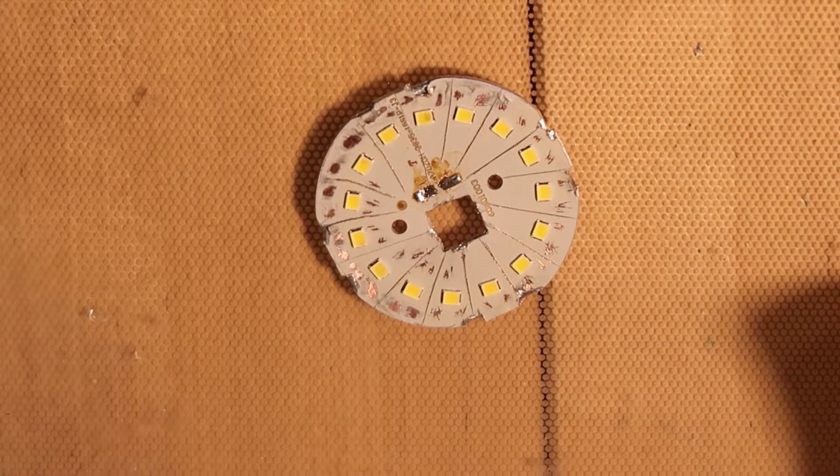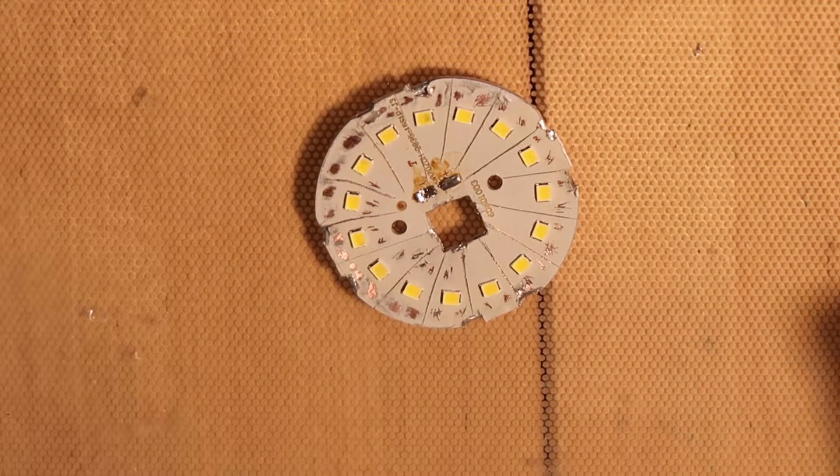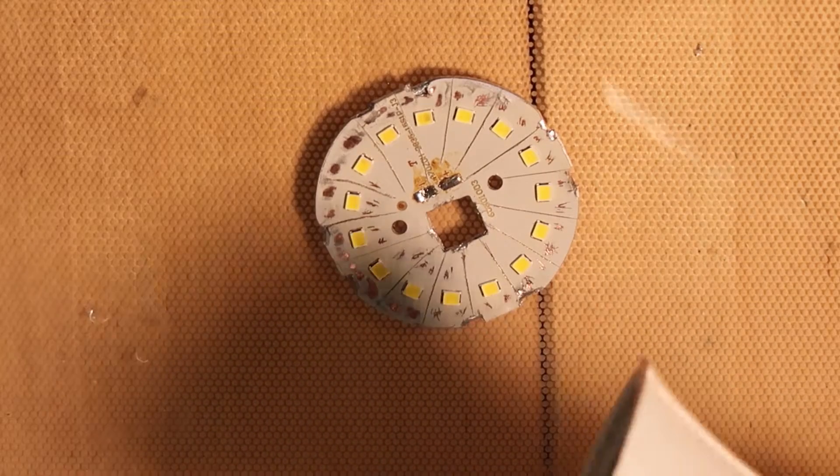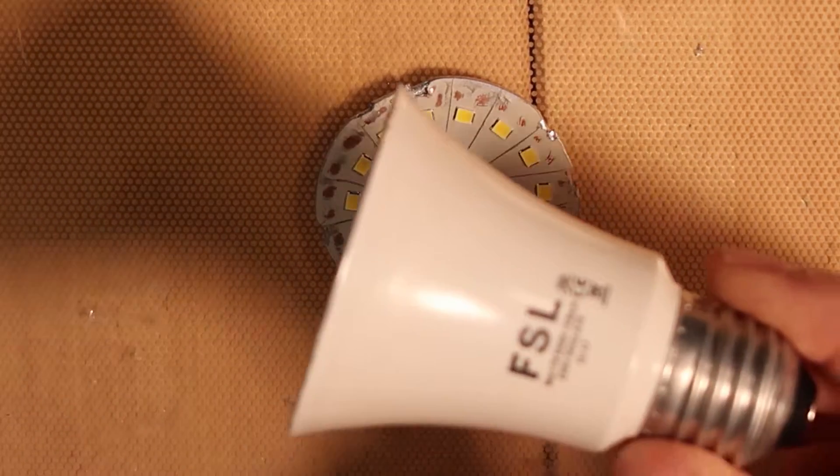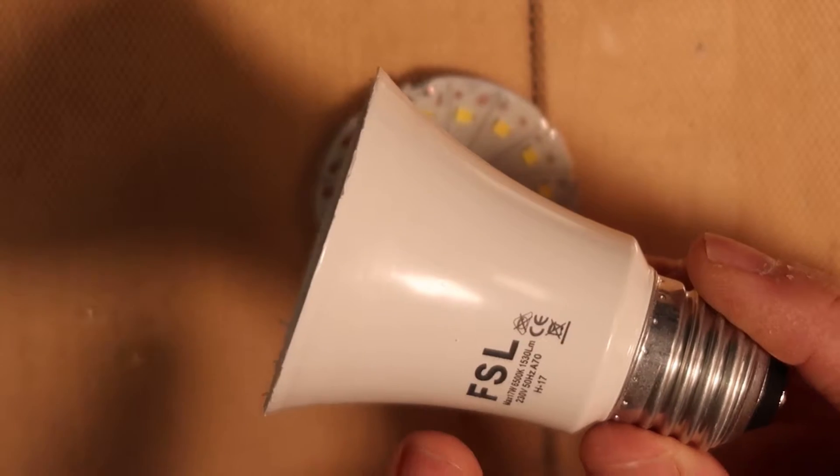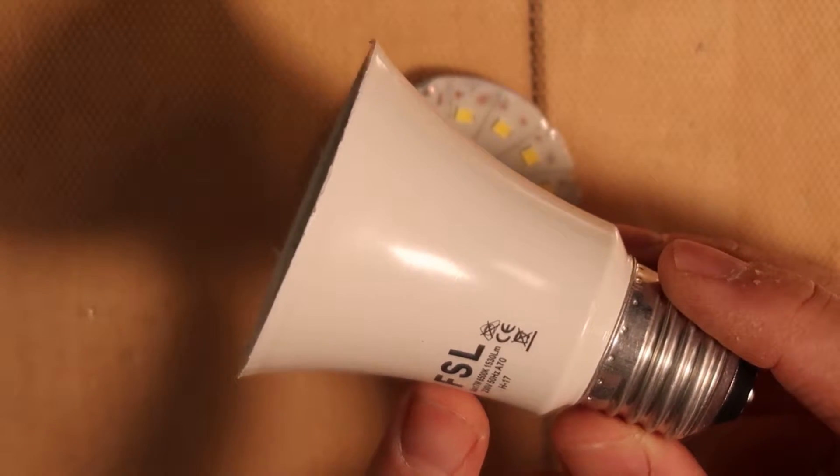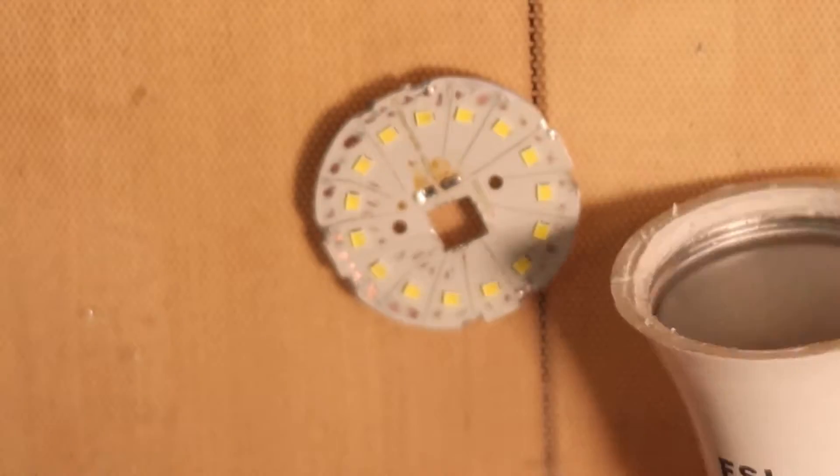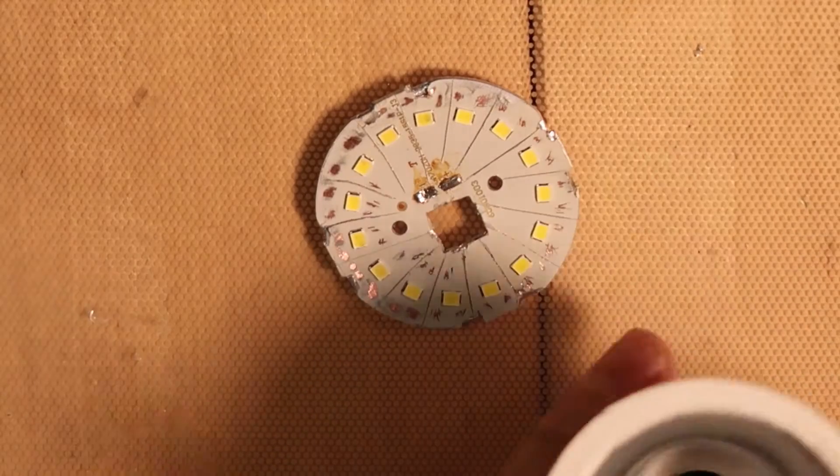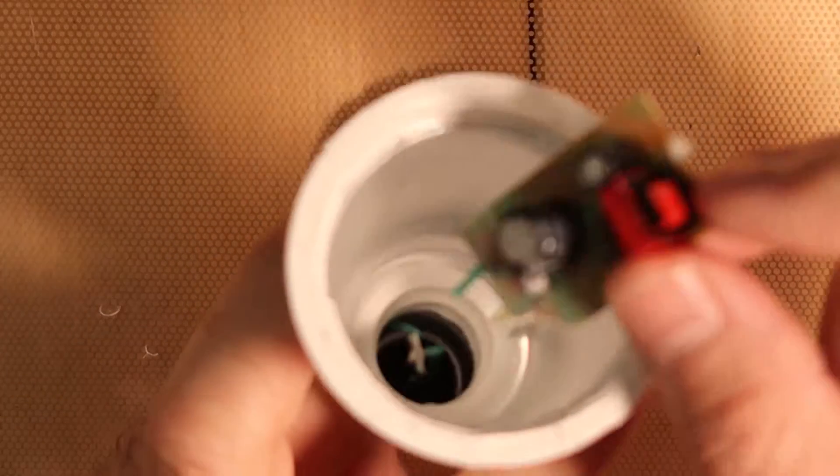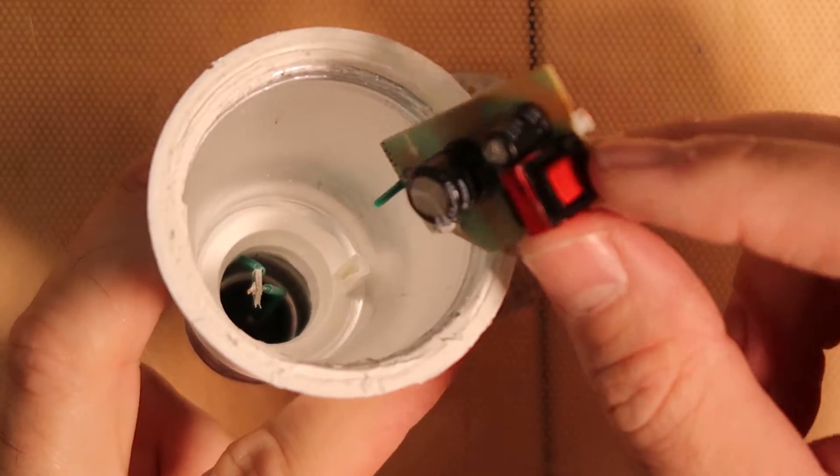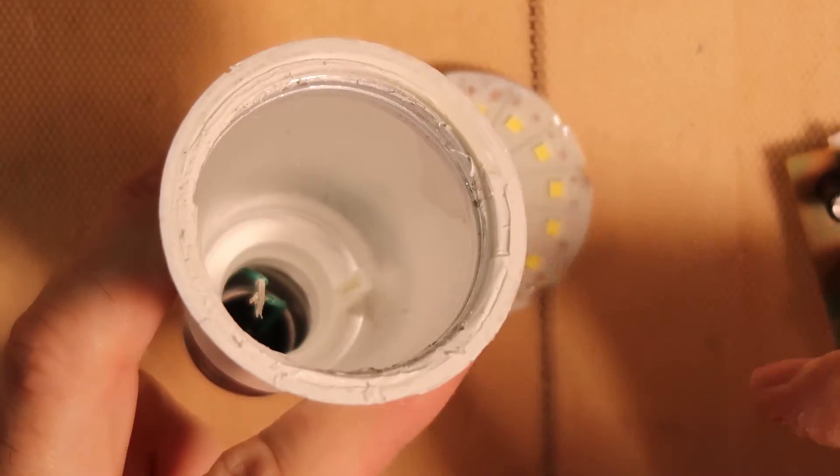Okay, so what I did for the next lamp bulb, I took something called FSL 17 watt. I have disassembled it and took from inside this power board. I have left the two wires that I will use.